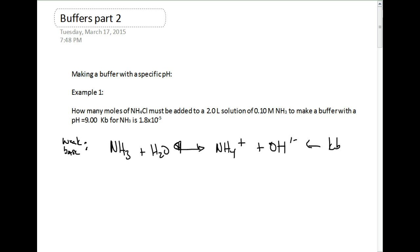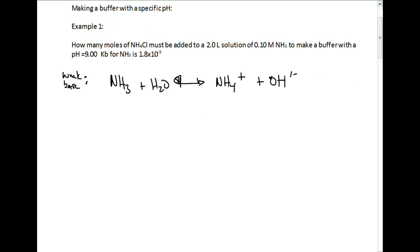They gave us Kb, they didn't just give us a Ka value that we would have to convert. We can ICE table this and see where we're at, what we have given to us. We are given 0.1 molar, we don't worry about the water, and we are given a pH of 9.